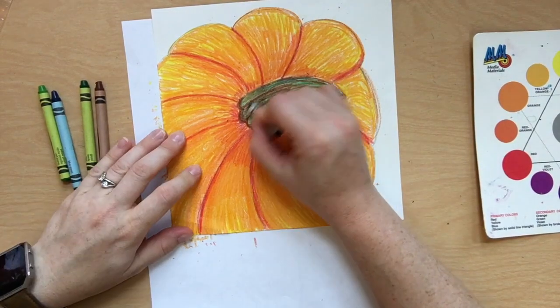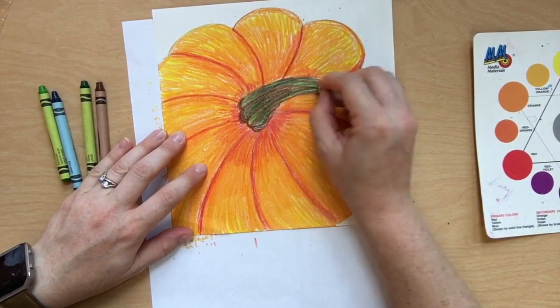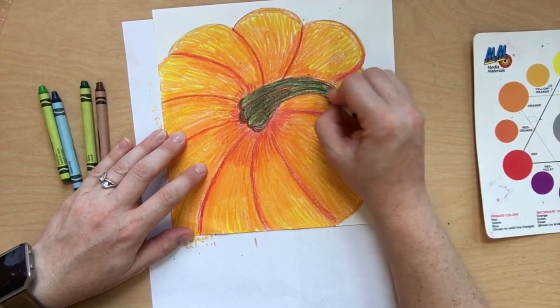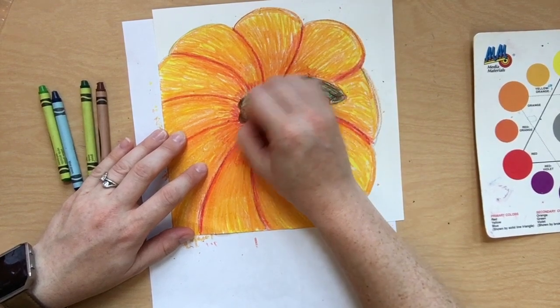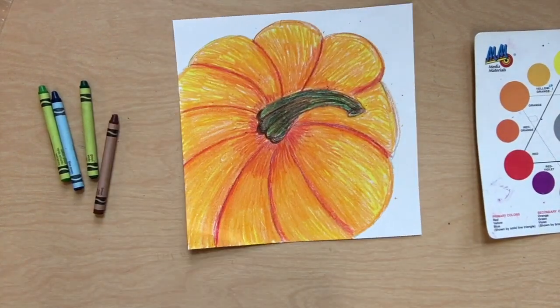Layering these colors will make your pumpkin look so realistic. If you really need to darken it more, bust out that black. Black will darken any color.